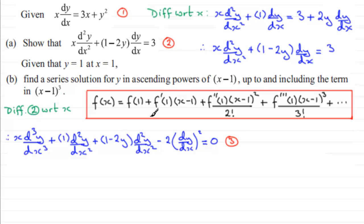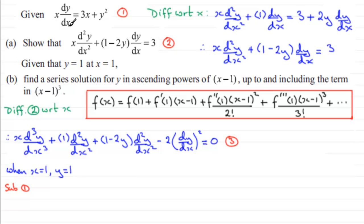We need dy/dx when x equals 1. Substituting x equals 1 and y equals 1 into equation 1: 1 times dy/dx equals 3 times 1 plus 1 squared, so dy/dx equals 3 plus 1 equals 4. Therefore f'(1) equals 4.